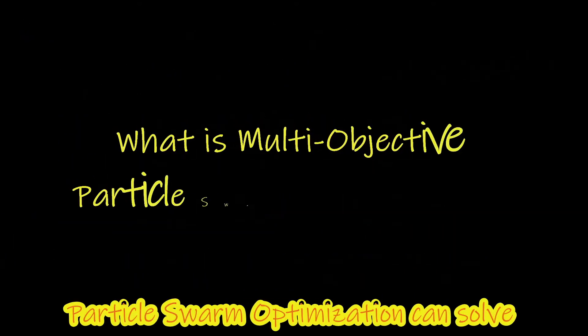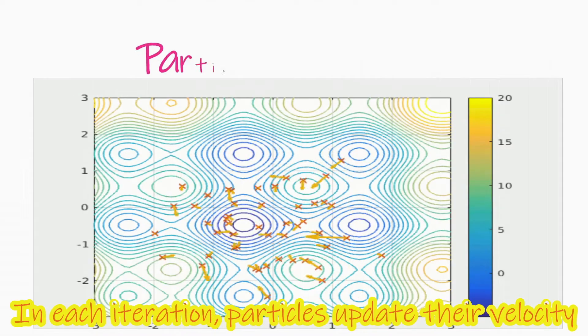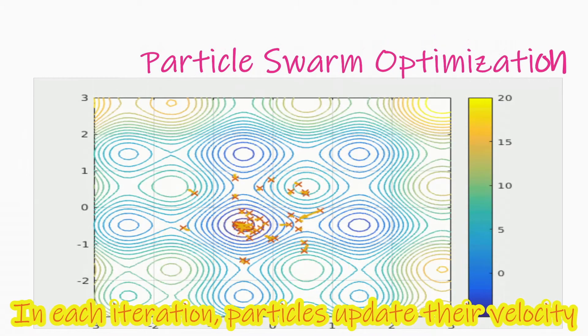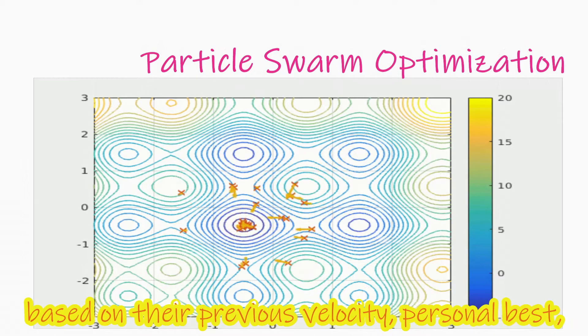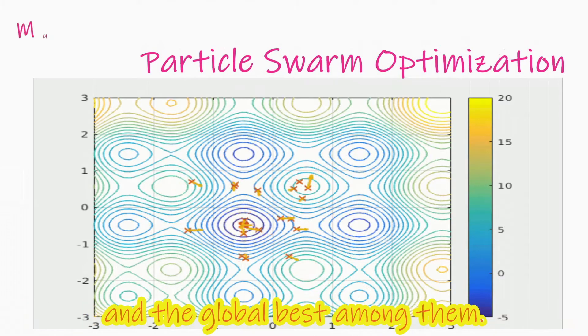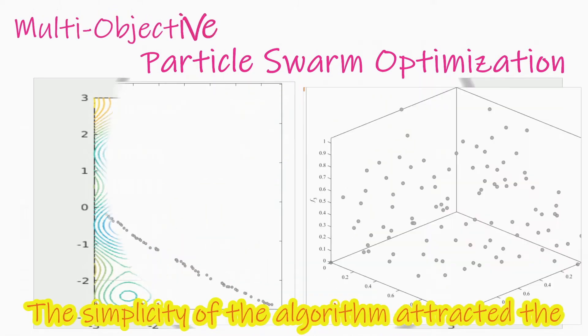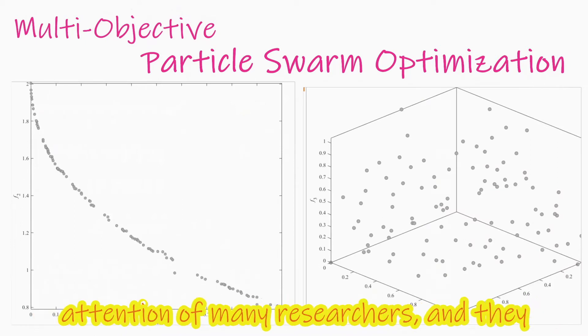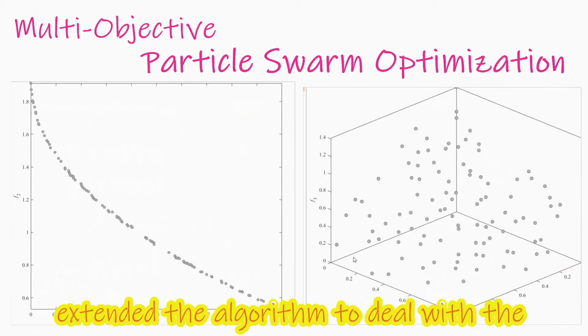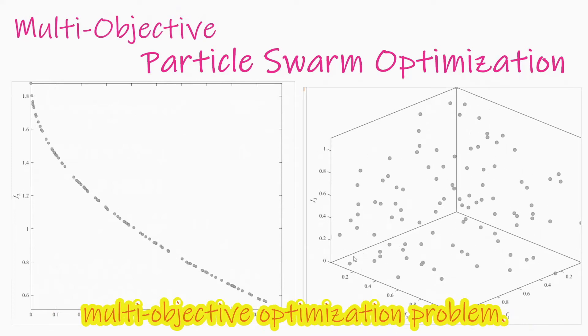Particle swarm optimization can solve single-objective optimization problems effectively. In each iteration, particles update their velocity based on their previous velocity, personal bests, and the global best among them. The simplicity of the algorithm attracted the attention of many researchers, and they extended the algorithm to deal with the multi-objective optimization problem.